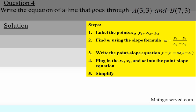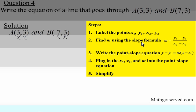I'll provide the steps again on the side to guide our problem-solving process. Step one: rewrite and label the points three, three as x1, y1 and seven, three as x2, y2. Remember, labeling them ensures that when substituting we don't interchange coordinates. Step two: find the slope using the slope formula y2 minus y1 over x2 minus x1.